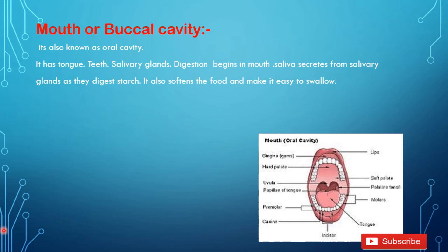The mouth has physical digestion because our teeth grind the food — breaking large food particles into smaller ones. In our mouth, a digestive gland is also present, known as the salivary gland. From the salivary gland, it secretes saliva. The function of saliva is that it softens and moistens the food, and it also digests the starch present in the food.